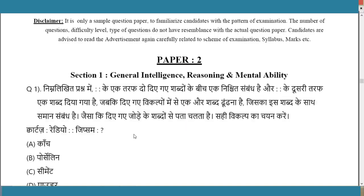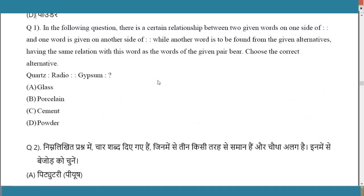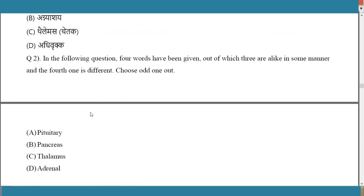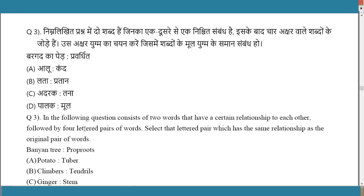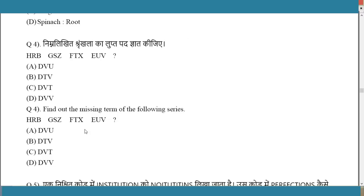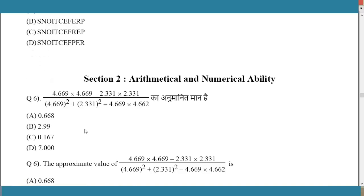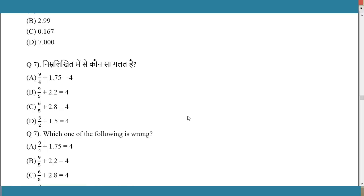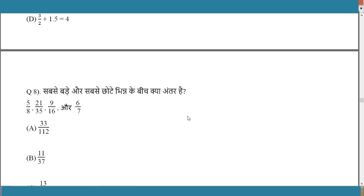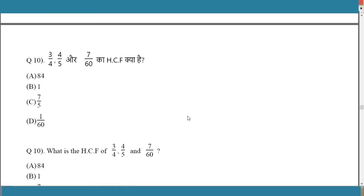Moving to Stage 2 — Paper 2 — Section 1 is General Intelligence and Reasoning. The sample shows analogy-type questions, odd-one-out classification, series-based questions, and coding-decoding. Section 2 is Arithmetic and Numerical Ability, with very basic fractions, division, and multiplication questions.